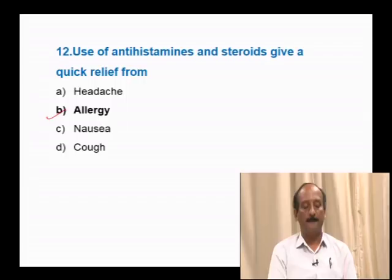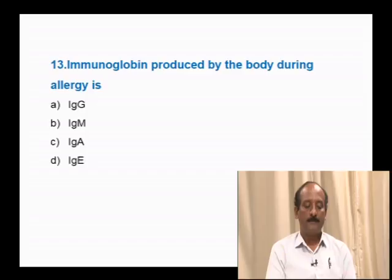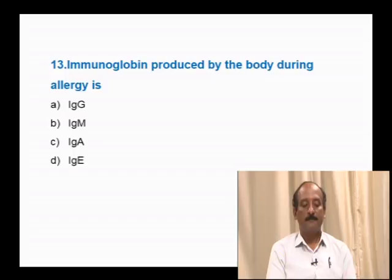Question number 13: Immunoglobulin produced by the body during allergy is — IgG, IgM, IgA, IgE. IgG antibodies are transported from mother to fetus through placenta, giving passive immunity. IgA antibodies are found in early secreted milk called colostrum. IgE antibodies are more secreted during allergic conditions, so elevated IgE levels result in allergy. The correct answer is IgE.